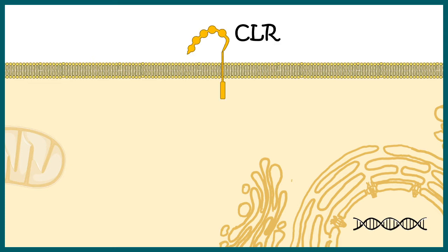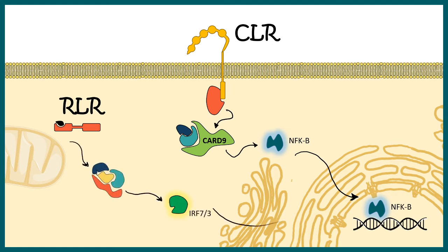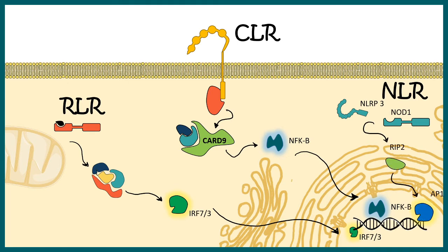Let's understand other types of pattern recognition receptors present on dendritic cells or other innate immune cells. C-type lectin receptors, or CLRs, signal with the help of CARD9 — the caspase recruitment domain 9 — and ultimately lead to activation of NF-κB and genetic changes. There are also RLRs, known as RIG-I-like receptors, whose ligands are different kinds of viral or bacterial RNA. RLRs ultimately activate IRF 7 or 3, leading to specific gene expression. Additionally, NLRs, or NOD-like receptors, work via a separate pathway and activate AP-1 family transcription factors for a separate set of gene expression.